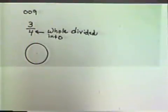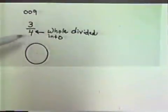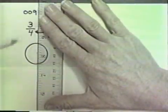Let's look at an example of a fraction three-fourths. In the fraction three-fourths, the whole is divided into four parts. So I'm going to use the circle here to represent my whole. I'm going to take my circle and divide it into four parts.